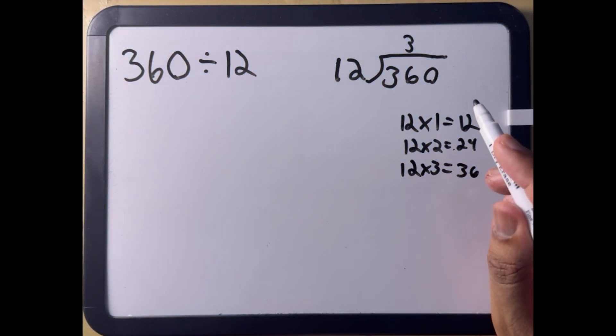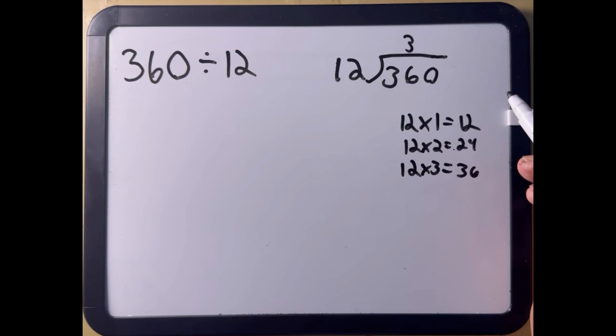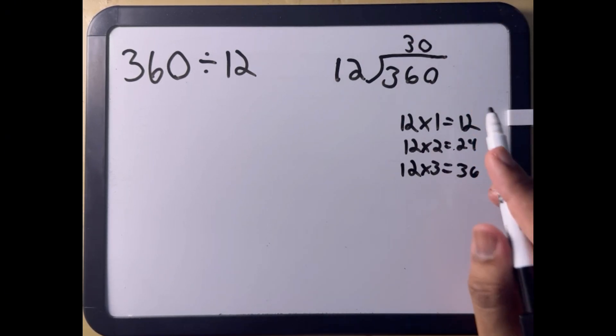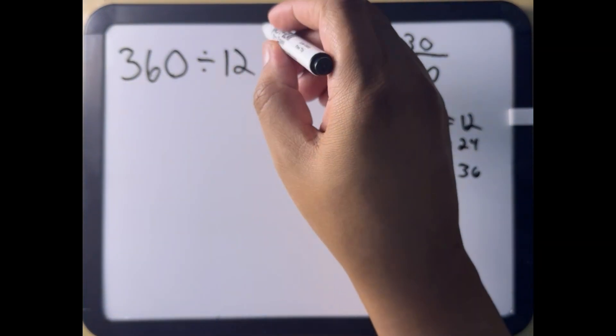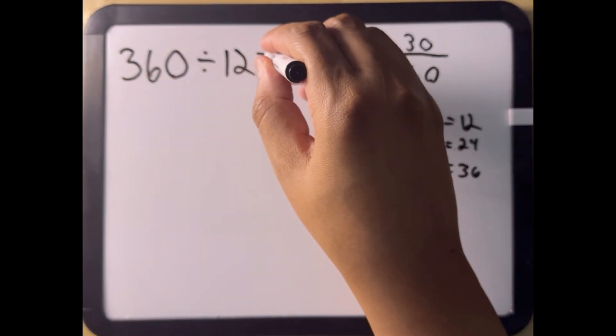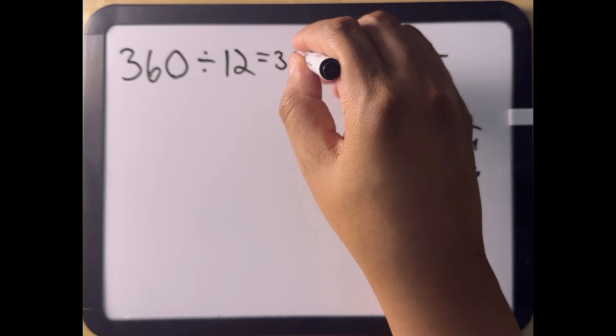To break this down, we really don't have to do any more calculations. If we multiply 12 times 30, we would get 360. So the answer is 30. 360 divided by 12 equals 30.